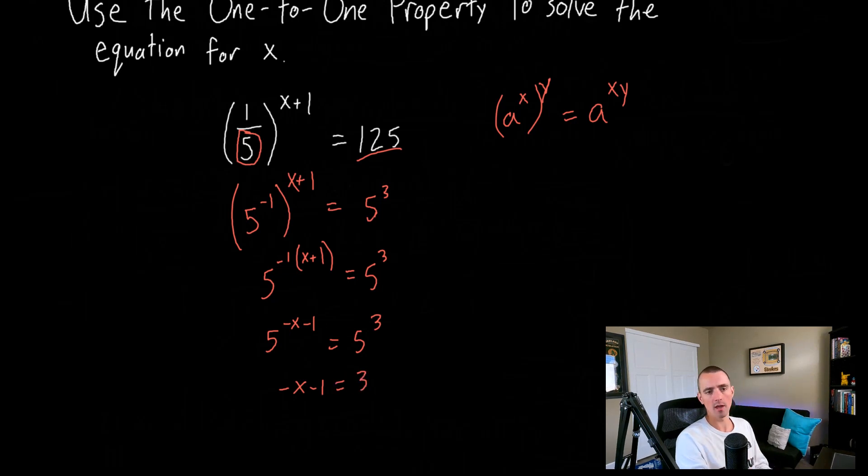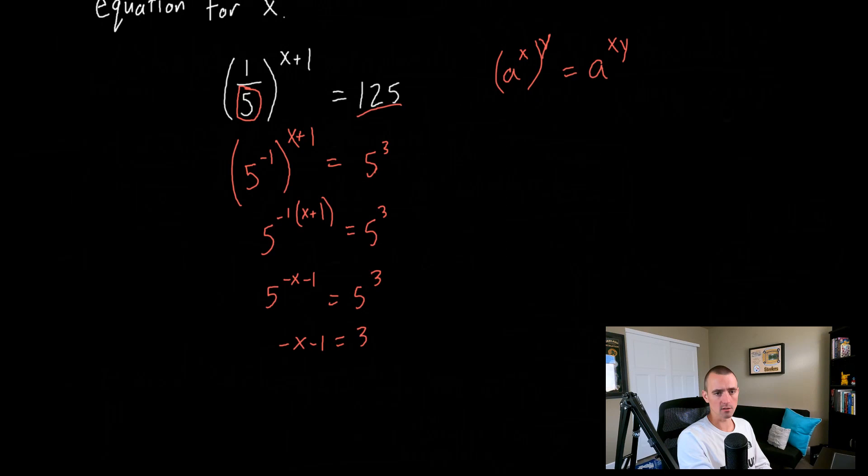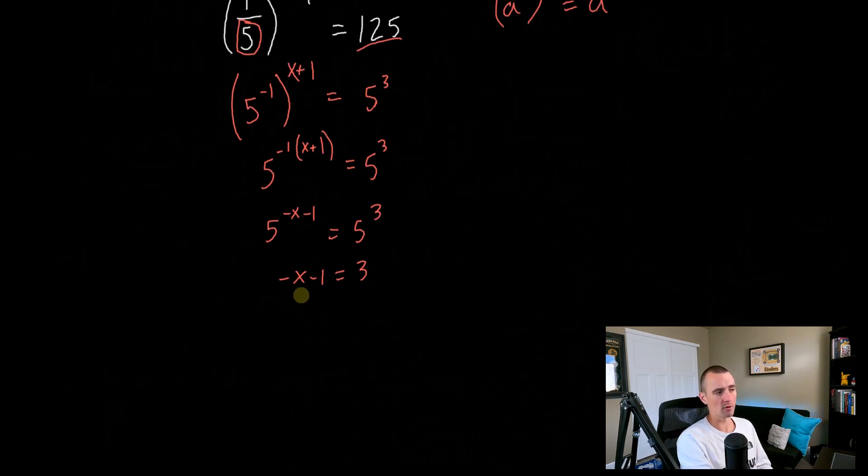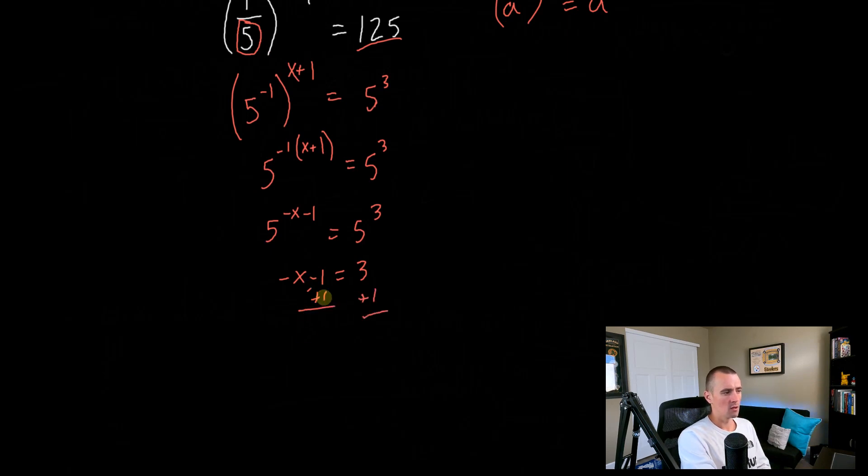And now we have a much simpler equation that we can solve, right? This is something that you're probably a little more familiar with how to solve something like this. We can just add one to both sides, giving us that canceling. So we have negative x equals three plus one is four. Multiply both sides by negative one, giving us the negatives canceling. So x equals negative four.